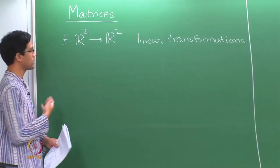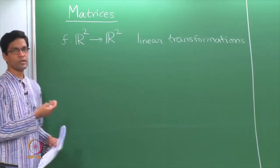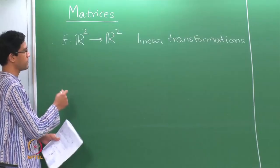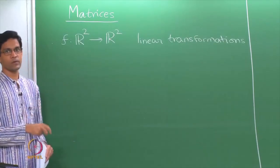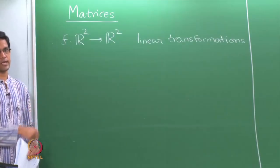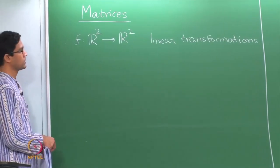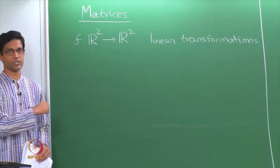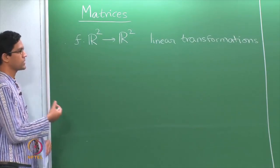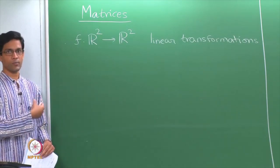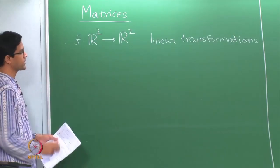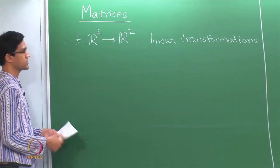A linear transformation was essentially determined by 4 numbers A, B, C and D, and arranging them in a 2×2 matrix form was the correct way of encoding this linear transformation. We saw that the operation of composition of linear transformations was precisely captured by the operation of multiplication of matrices. That is already a context in which we have encountered matrices.